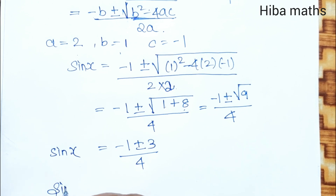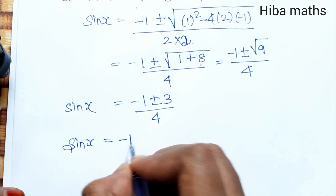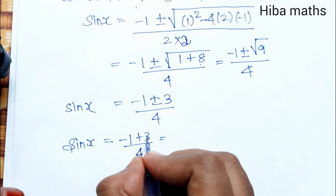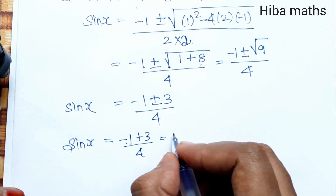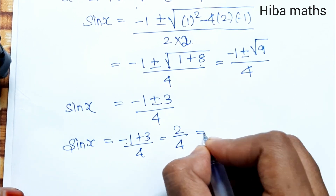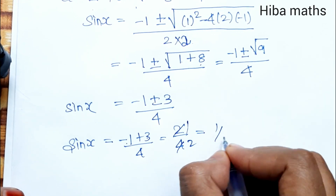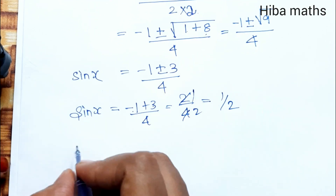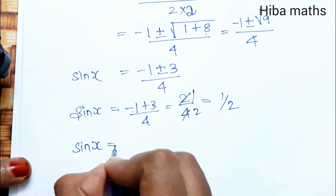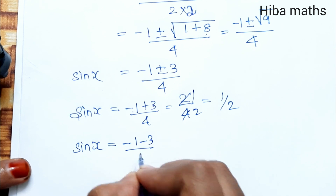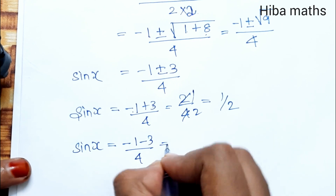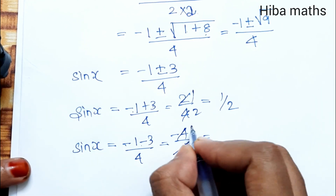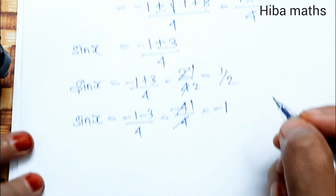Taking the two roots: sinx equals minus 1 plus 3 divided by 4, that is 2 by 4, which equals 1 by 2. For the second root: sinx equals minus 1 minus 3 by 4, that is minus 4 by 4, which cancels to minus 1.